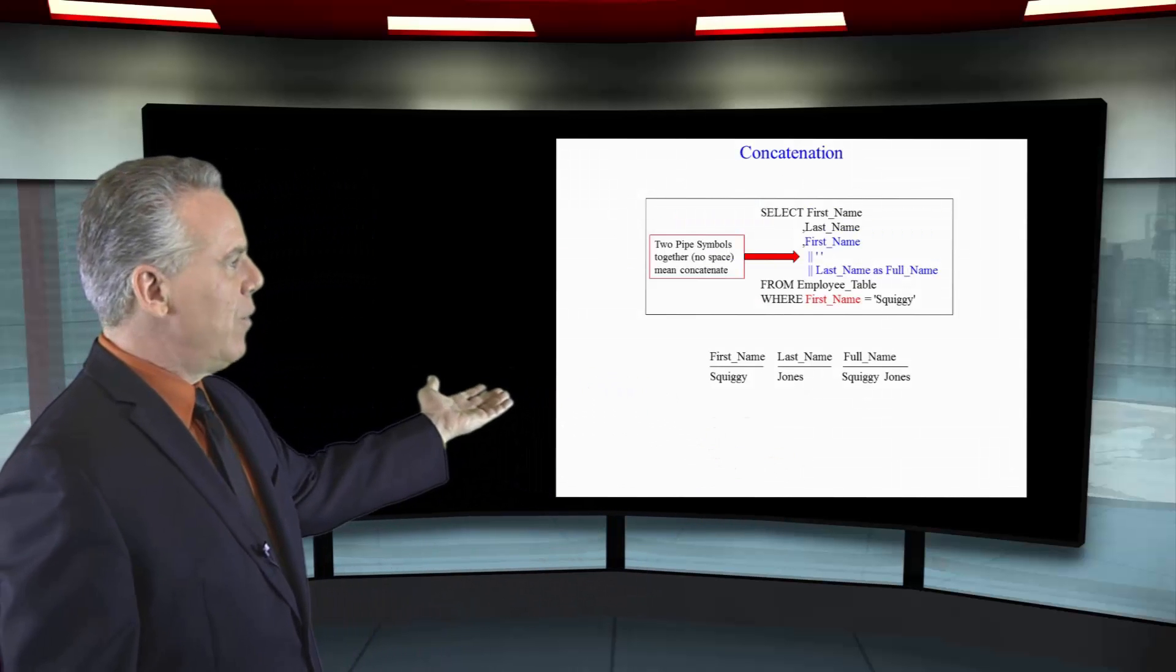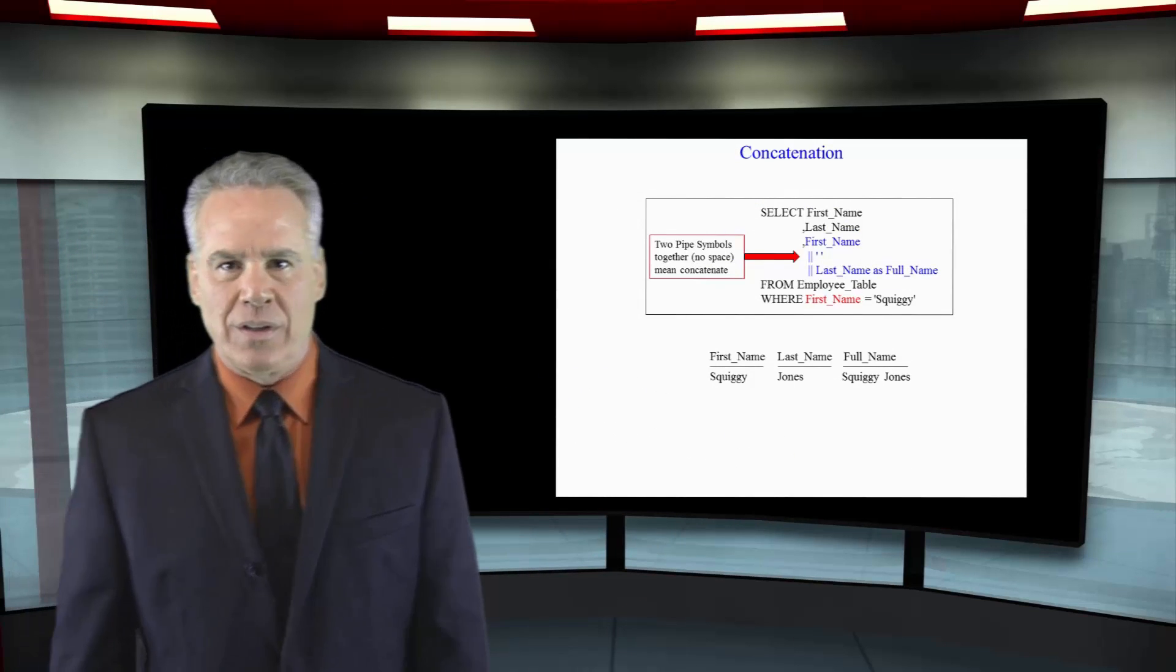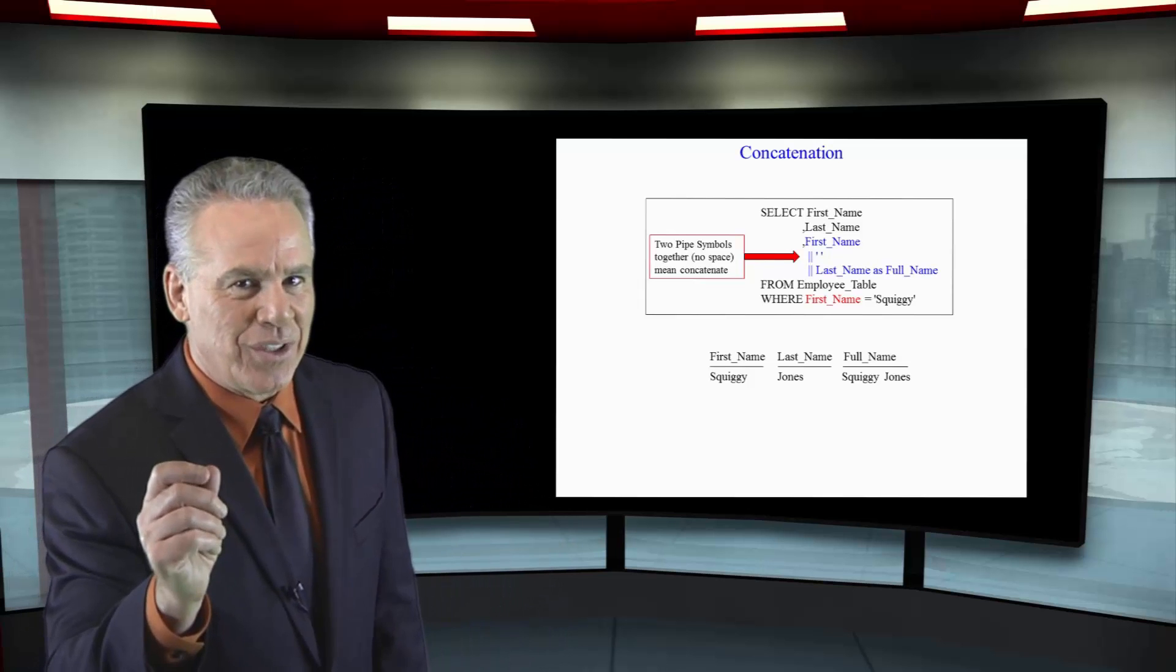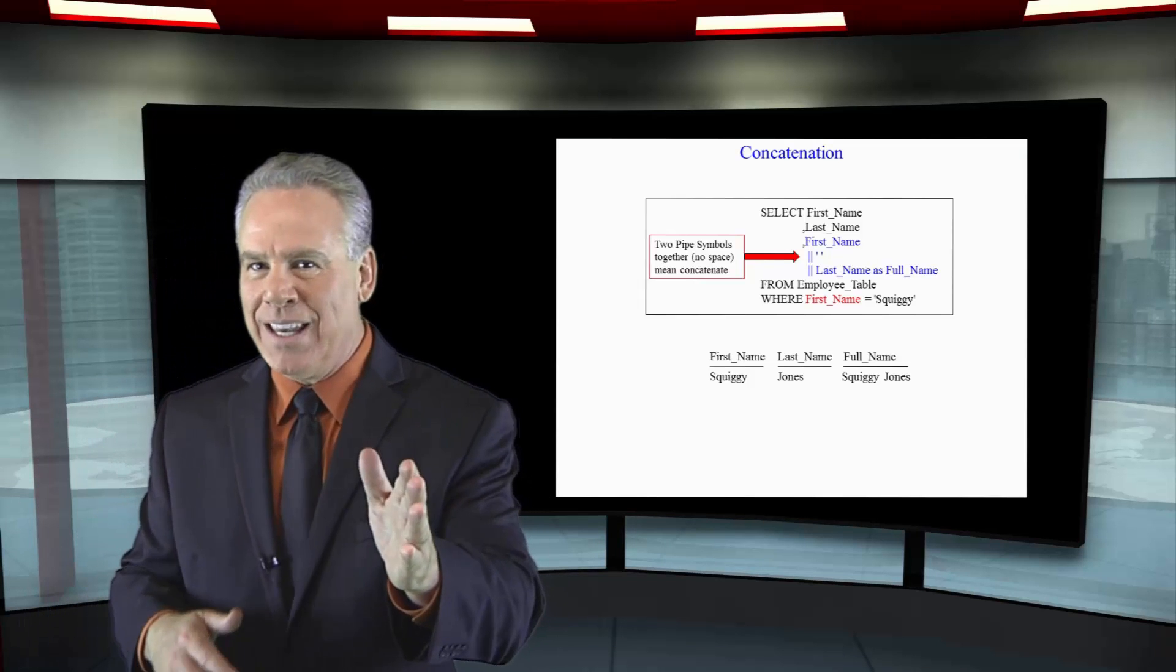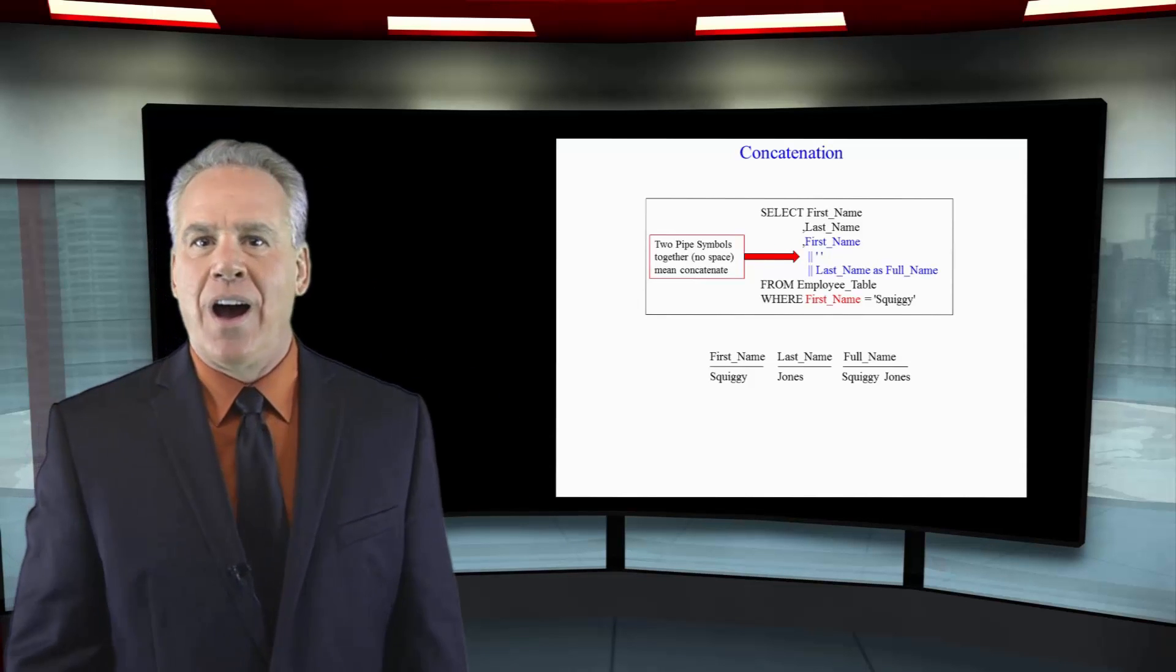And we use a where clause to just get where the first name is equal to Squiggy, so we've got our report. First name, Squiggy. Last name, Jones. Full name, Squiggy space Jones. I've got three columns on this report.